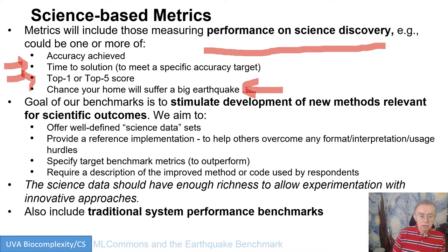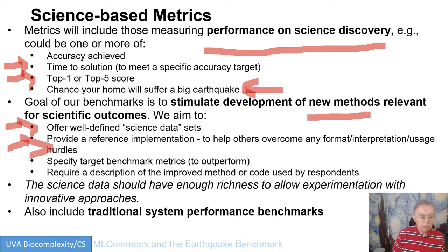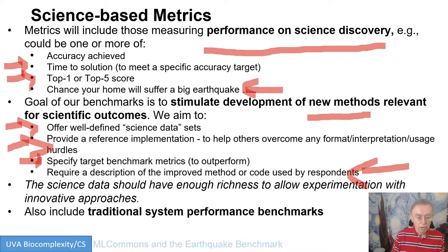We're trying to use these benchmarks to help stimulate new methods and new approaches to science. Like the rest of ML Commons, we want to provide well-defined science datasets. We want to provide so-called reference implementations. We want to specify target metrics — measures of scientific accuracy. And we want to document it all properly, and we want the data to be rich enough that you can experiment with new approaches.